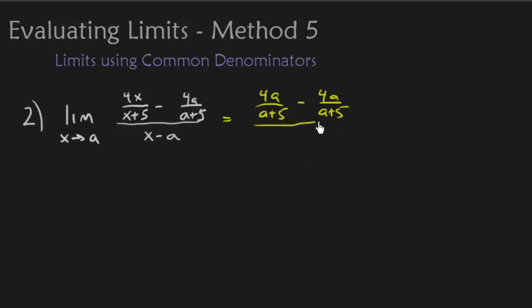So on the top you can actually see that I have two identical terms, so when I subtract them I'm going to get 0. On the bottom, same thing, a minus a is 0. So we get that 0 over 0 case, which means we have to do something.